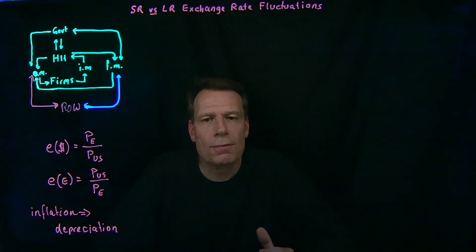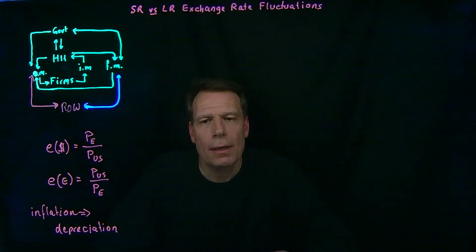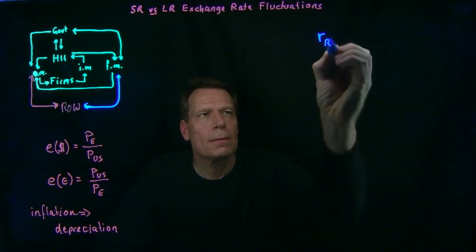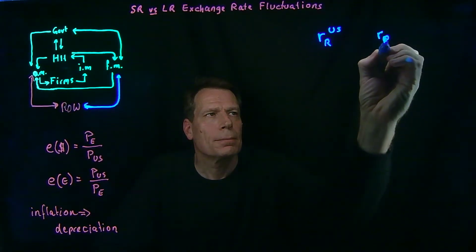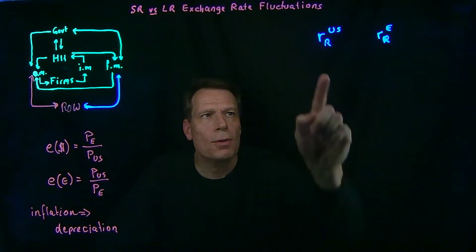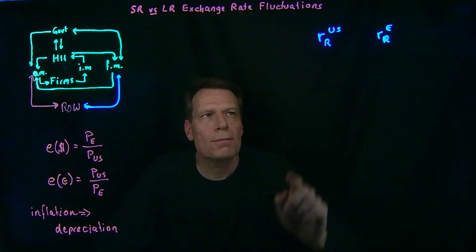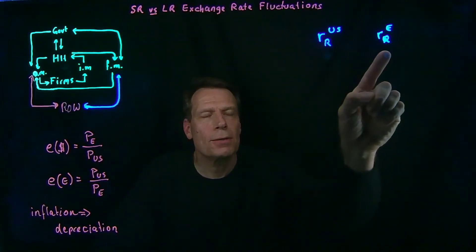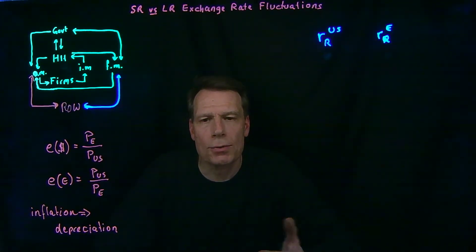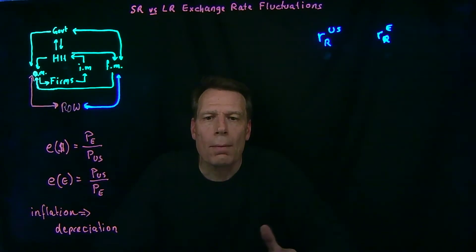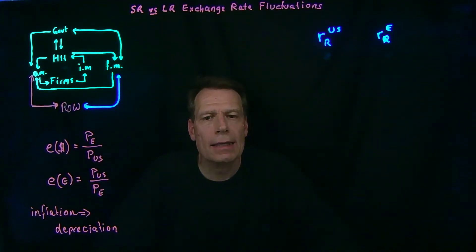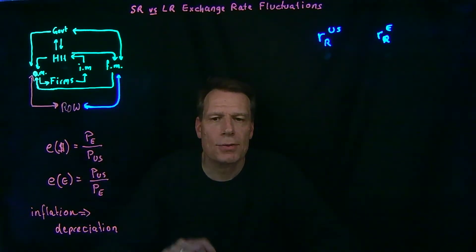It implies that the rates of return on similar assets have to be equal across countries in the short run. So if you look at the real interest rate in the US and compare it to the real interest rate in Europe, the law of one price implies those should be equal. If they weren't — if the real interest rate in the US were higher than in Europe — then if you're holding European bonds, you would want to sell those bonds and buy US bonds with the higher rate of return. So arbitrage leads to an equalization of the real rate of interest across countries, and that can happen very quickly.